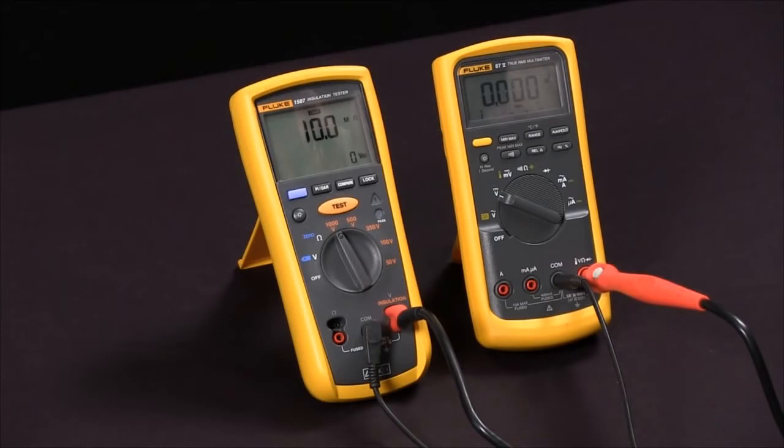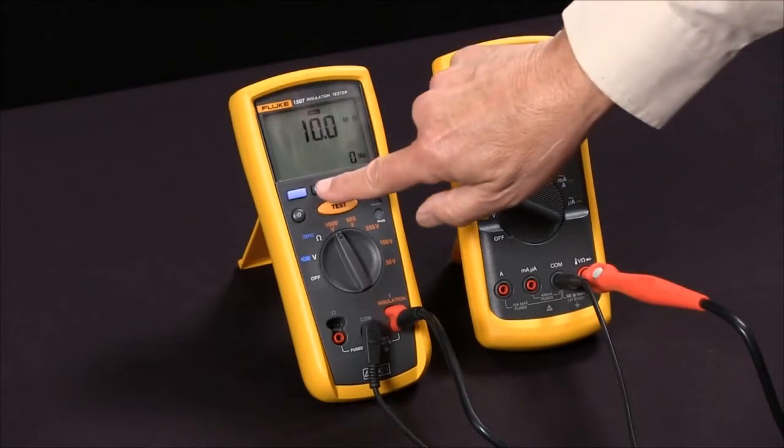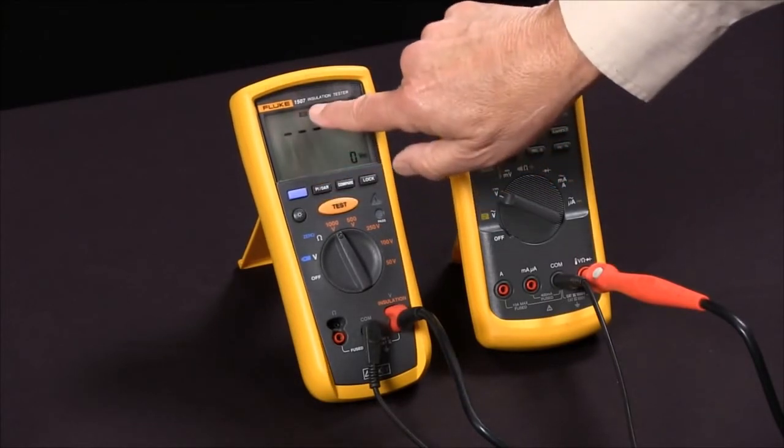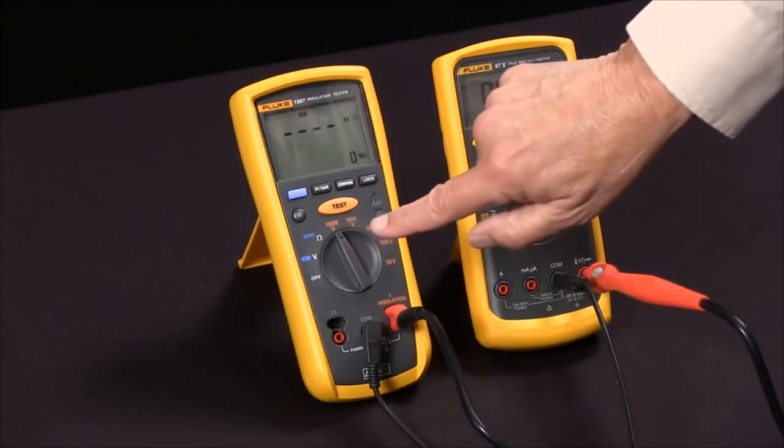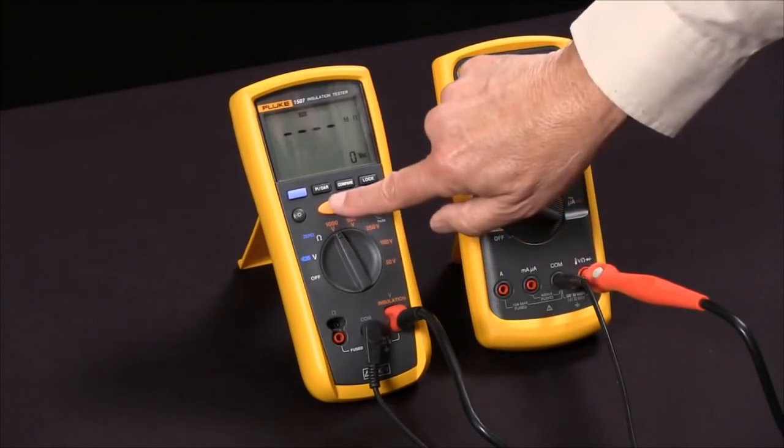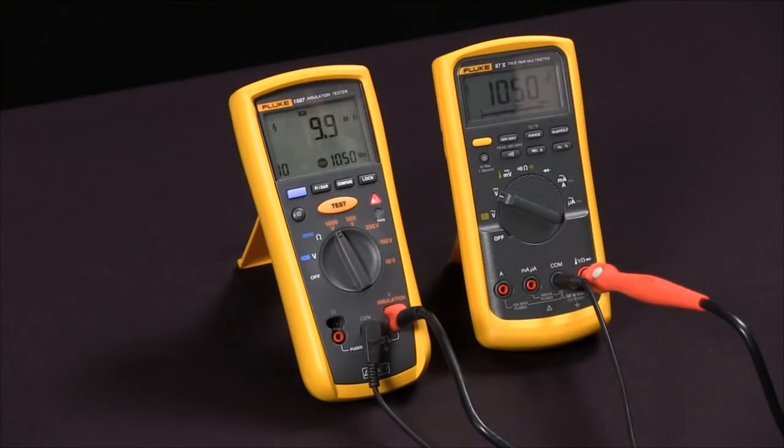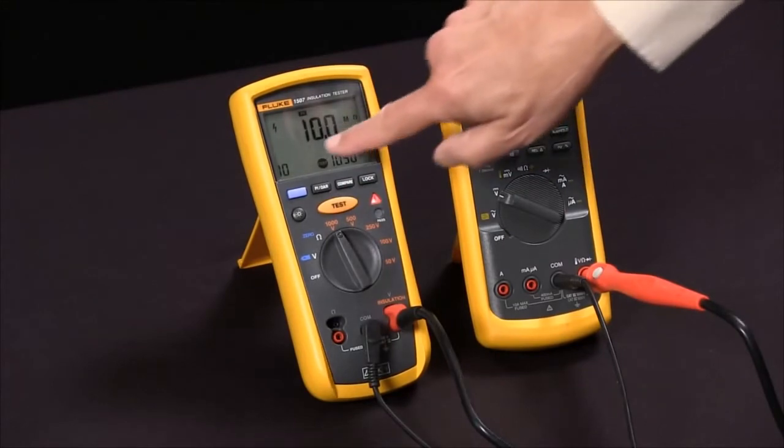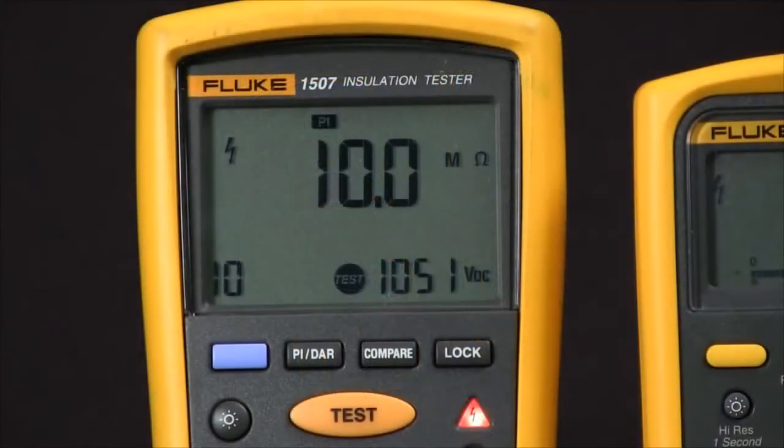Polarization index is done the same way. I select polarization index, 1,000 volts, and I push the test button. It begins a 10 minute test, so you see 10 minutes, and that will count down. At the end result, it will show the ratio.